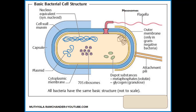In this cytoplasm, 70S ribosomes are present. The 70S ribosomes mainly help in the synthesis of needed proteins by the translation mechanism. Also in the cytoplasm, reserved food materials are present, called volutin. They are made with metaphosphates and glycogen granules.